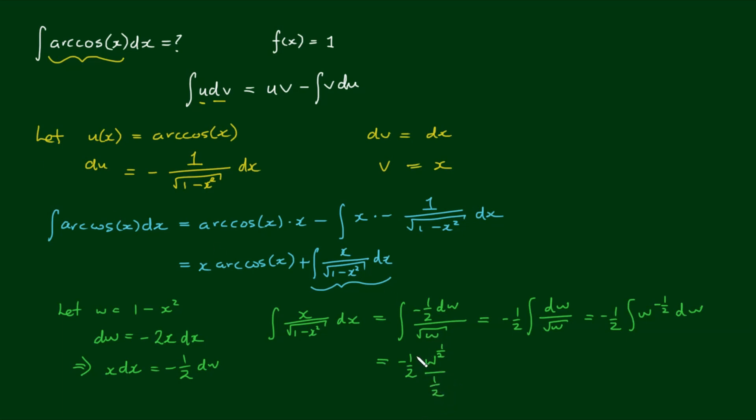So the half on the top cancels with the half on the bottom, and the result of this integral is negative w to the power of 1 half, which equals negative square root of w, which equals negative the square root of 1 minus x squared once we perform the back substitution.